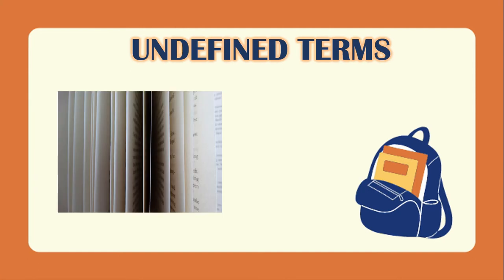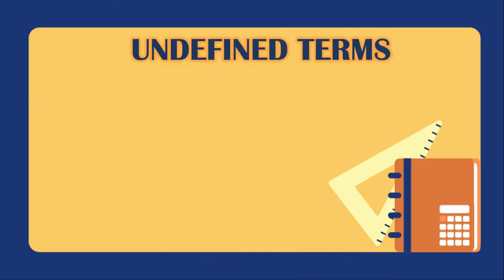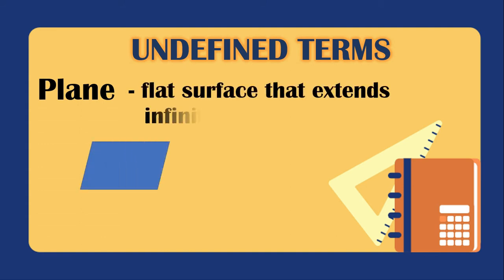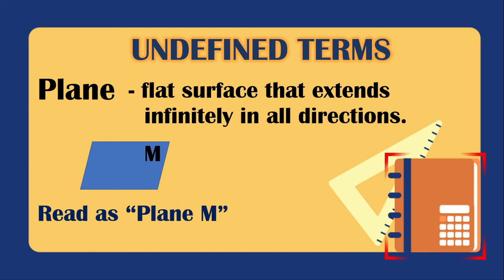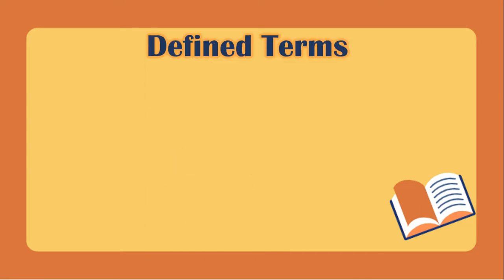The third undefined term is the plane — a flat surface that extends infinitely in all directions. This plane is named plane M. A real-life example of a plane is the surface of a notebook. Now let's have the defined terms, which are terms that have a definition.